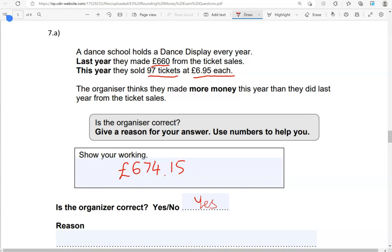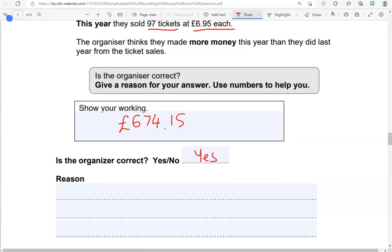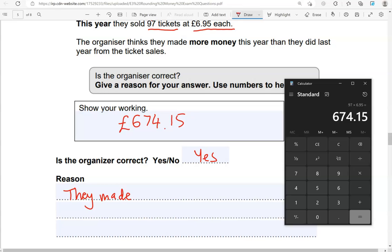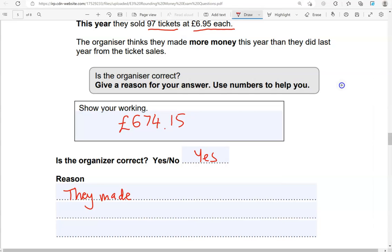Because they think they made more money this year, and that was correct. The reason they made, how much more did they make? If we take away £660 gives us £14.15. So they made £14.15 more this year.